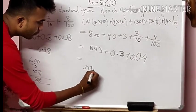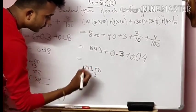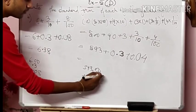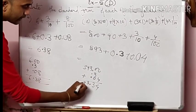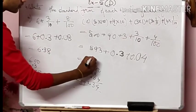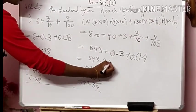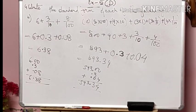So we have: 593 plus 0.3 plus 0.04. Writing in column form: 593.00 + 0.30 + 0.04. Four plus zero is 4, three plus zero is 3, and the whole number is 593. So we get 593.34. I think we have got this. If you have any doubt, you can ask me. I hope this is all clear. Some of the questions I will give you to do in class time and send to me. By this, we have completed our exercise. Thank you.